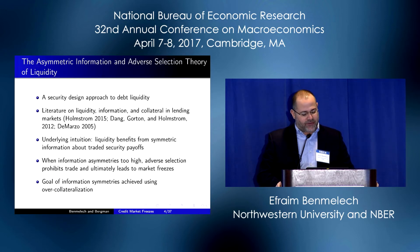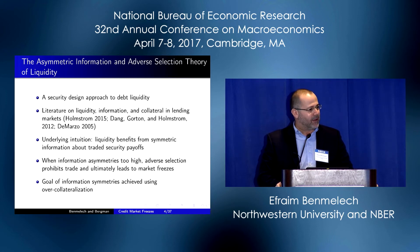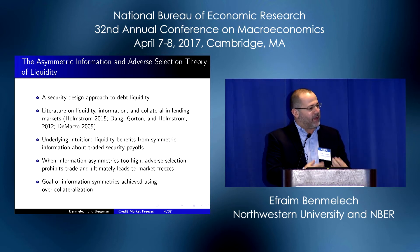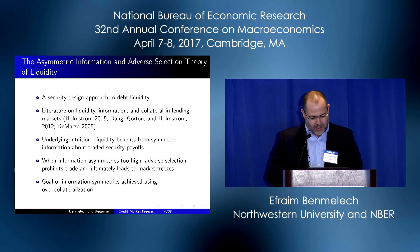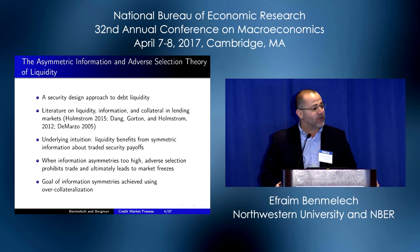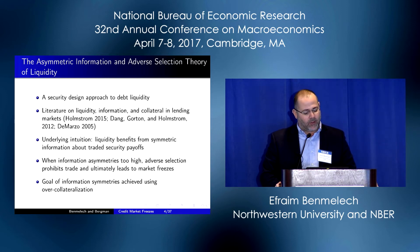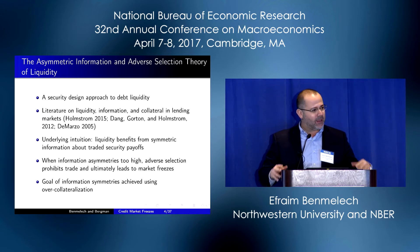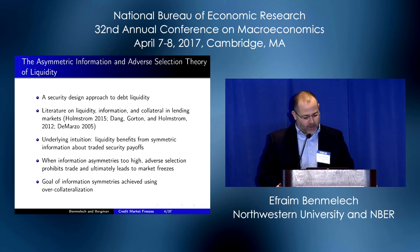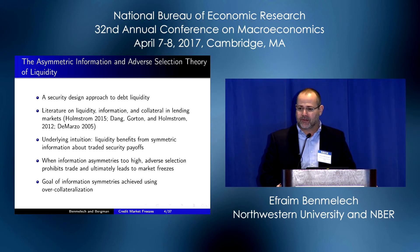Let me start with the first theory, the asymmetric information and adverse selection theory of liquidity. It's a security design approach to liquidity. It argues that liquidity in credit markets is driven by the payoff structure of debt contracts. An influential paper by Peter DeMarzo writes an optimal contract for pooling and tranching, or asset-backed securities. And more recently, papers by Dang, Gorton and Holmstrom look into liquidity in credit markets.